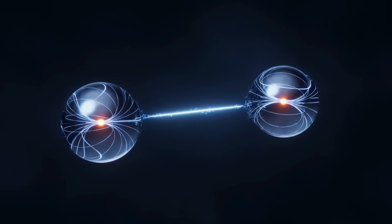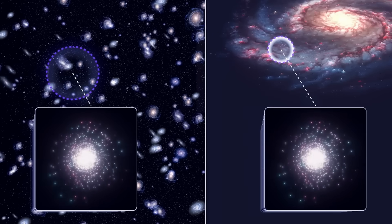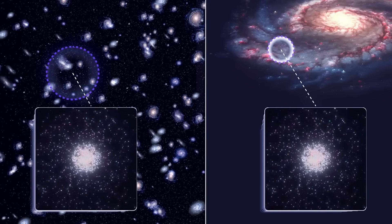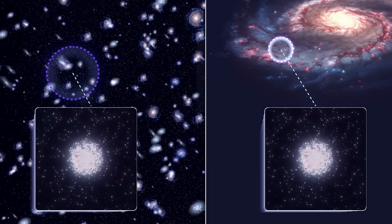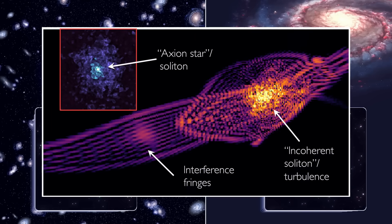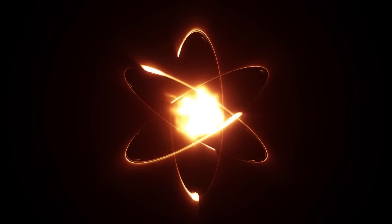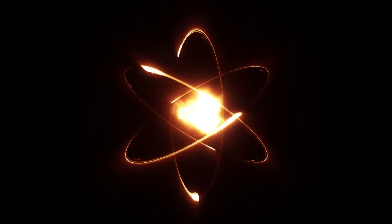And then there's the strangest possibility of all. What if axions themselves are a form of quantum computation happening at a cosmic scale? Some radical theories propose that dark matter may function like an unknown information processing system, one that governs the evolution of the universe in ways we don't yet understand. If true, then quantum computing wouldn't just be a tool for detecting axions. It might be a way to communicate with the hidden architecture of the cosmos.